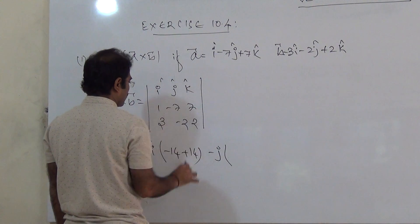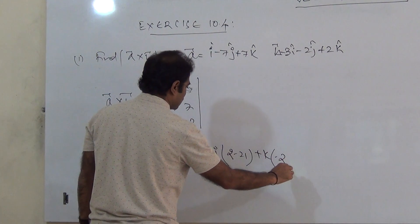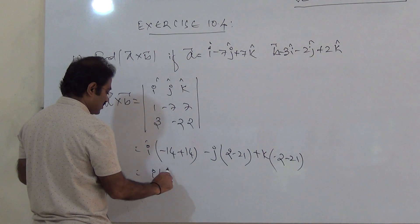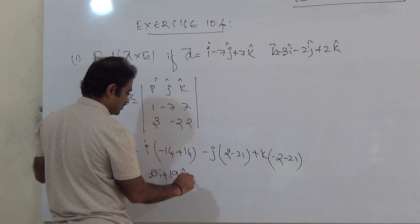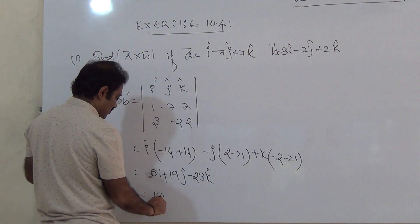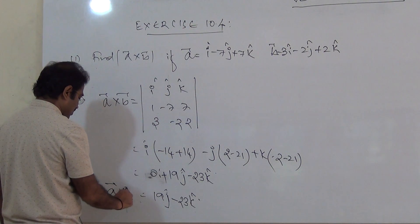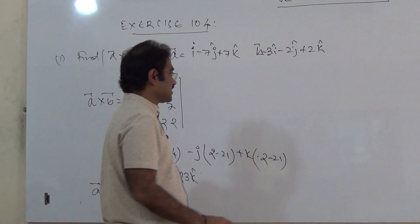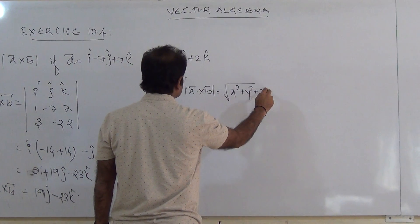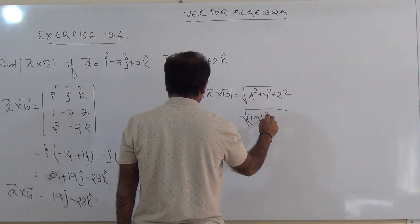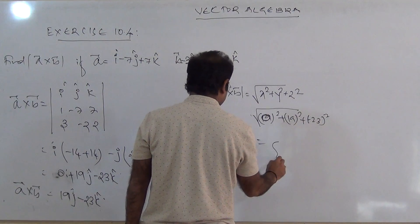Eliminate the row and column in which j is present: −2 minus 21. This gives i into 0, so the i-component is 0i. The j-component becomes +19j and the k-component is −23k. So A×B = 19j − 23k. For the magnitude: square root of (0² + 19² + 23²) = square root of (0 + 361 + 529). Simplify to get the answer.